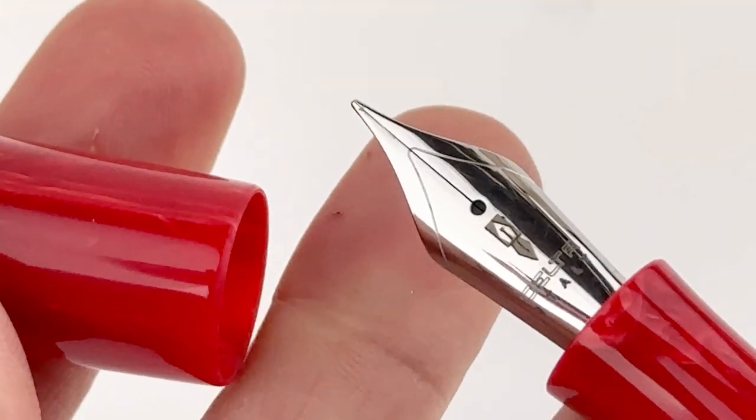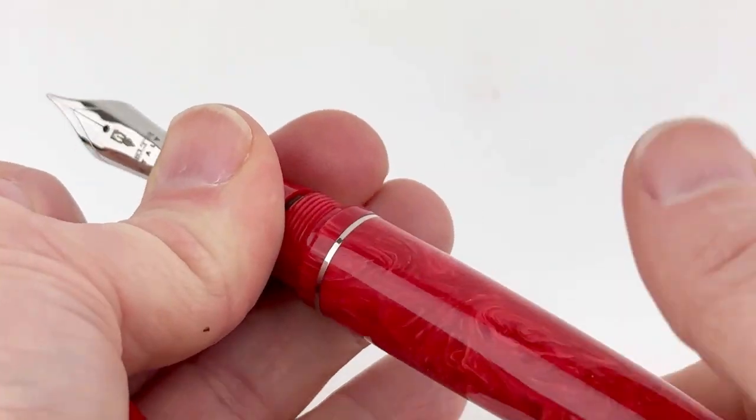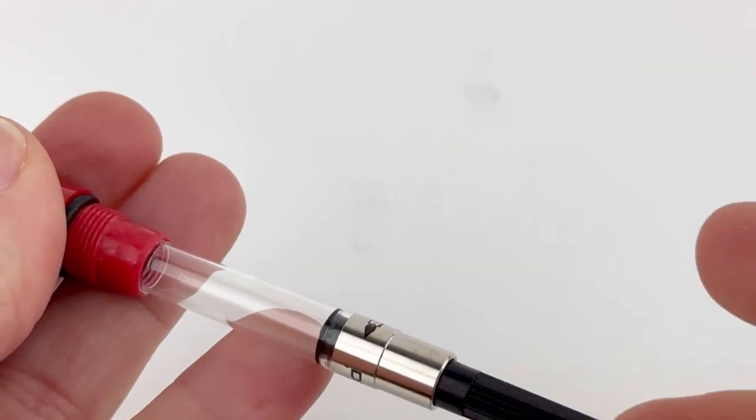It has a threaded cap, and the section matches the rest of the pen. The cap, barrel, and section are all the same color resin.